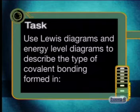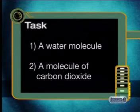Now that we have looked at different types of covalent bonds, I hope you can see that even for these molecules, it is the net electrostatic forces that act as the glue that holds the atoms together, and that gives rise to the particular physical properties of the substances. Now for your tasks: use Lewis diagrams and energy level diagrams to describe the type of covalent bonding formed in a water molecule and a molecule of carbon dioxide.